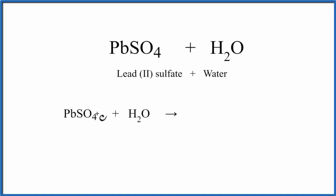So lead's a metal, and then we have this group of non-metals, it's called a polyatomic ion. SO4 is the sulfate ion, and when we have a metal and non-metals, we have an ionic compound.